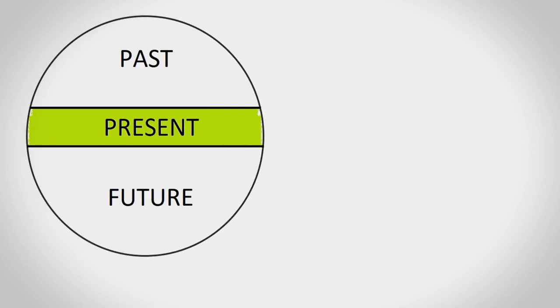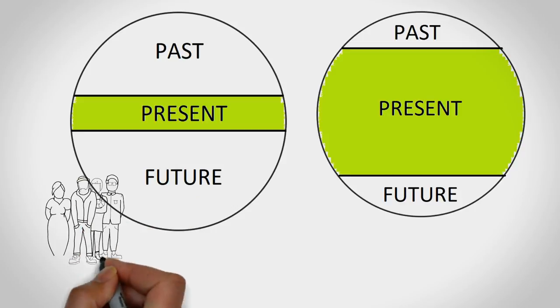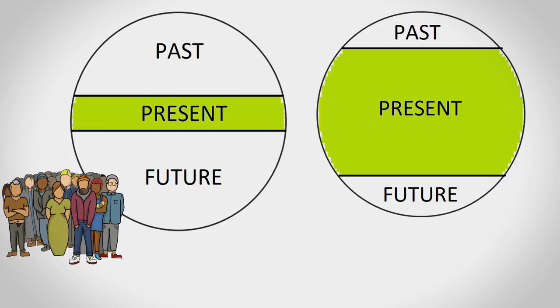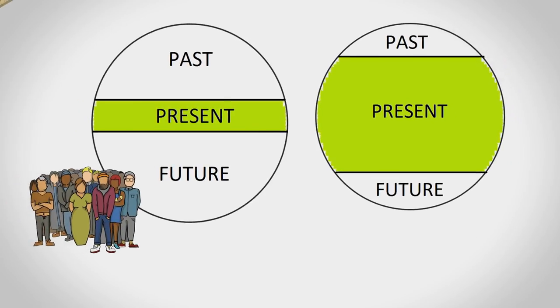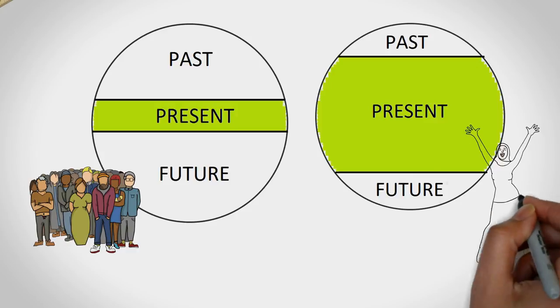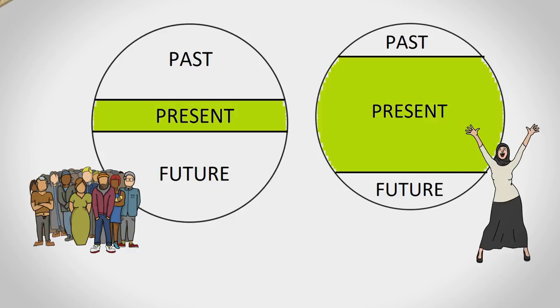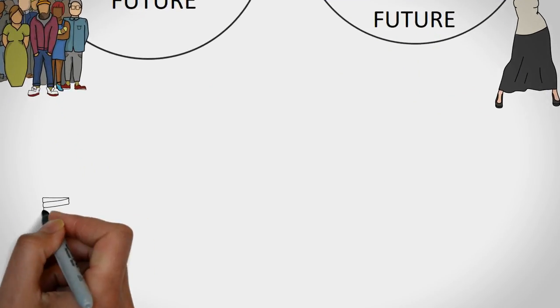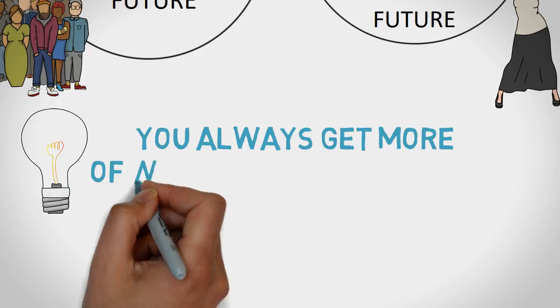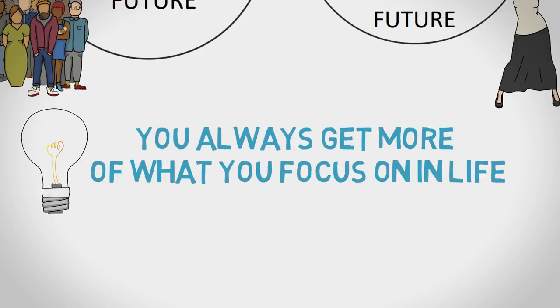Now have a look at these two circles. Most people are like the first one. They focus more on the past and the future and ignore the present. The very few and fortunate are like the second one. Here you will get more out of yourself and your life on a daily basis. Just remember this key principle, you always get more of what you focus on in life.